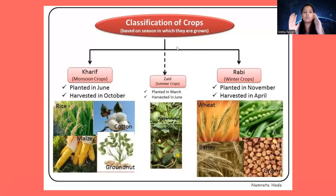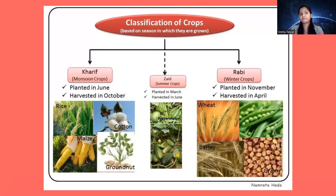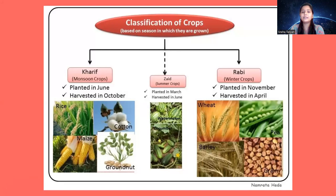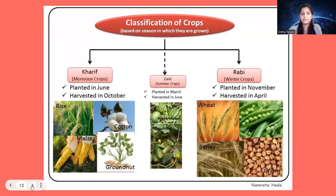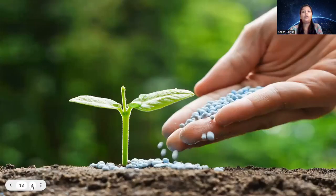Crops are classified based on the season in which they are grown. Kharif crops are planted in June and harvested in October. Zaid crops are planted in March so they are ready by summer and harvested in June. Rabi crops are planted in winter, around November, and harvested once winter is over, around April.